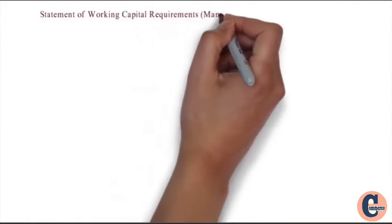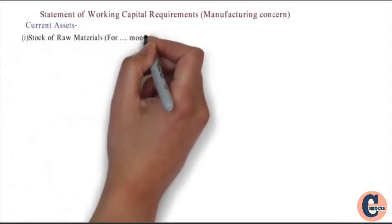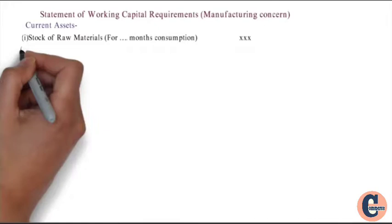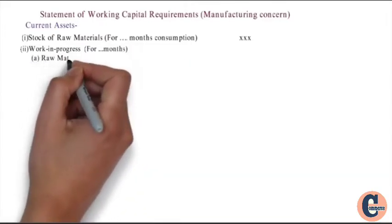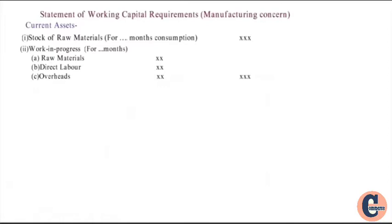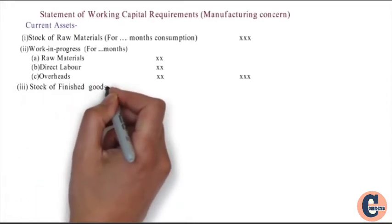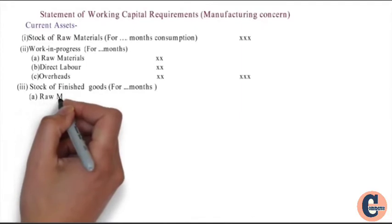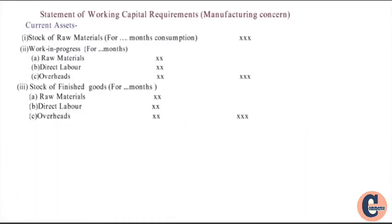Statement of working capital requirements for a manufacturing concern. We start with current assets. First: stock of materials, 4 months — amount in outer column. Second current asset: work in progress, 4 months. Work in progress comprises of raw materials, direct labor, and overheads — total of these three shown in outer column. Third current asset: stock of finished goods, 4 months. Stock of finished goods comprises of raw materials, direct labor, and overheads — total shown in outer column.